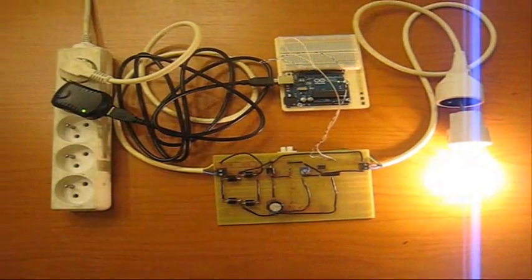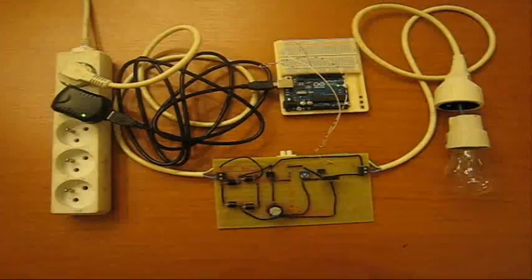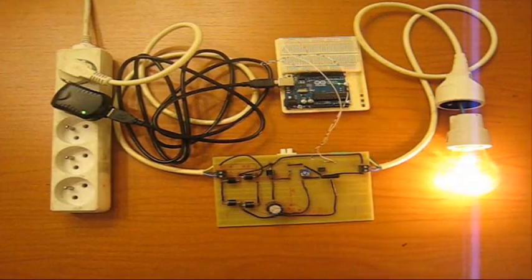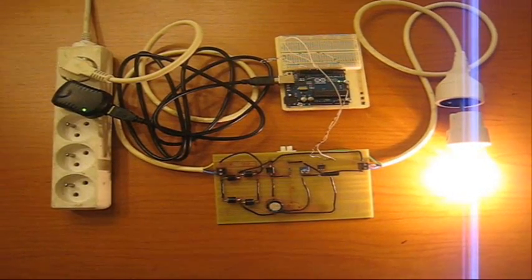This video shows the results of an experiment which demonstrates that light dimming is possible with pulse width modulation even on alternating current.